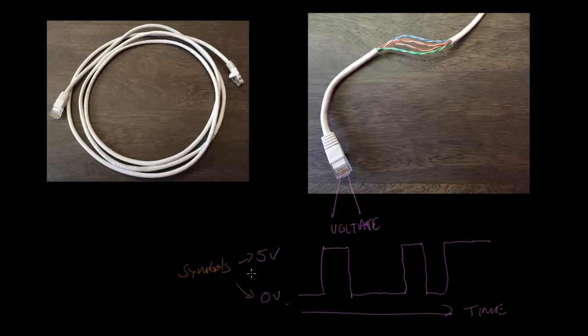And we call these symbols because we can use them to represent information, like a number. So for example, we could say that zero volts is a symbol that represents the number zero, and that five volts is a symbol that represents the number one.